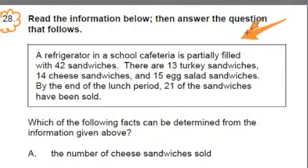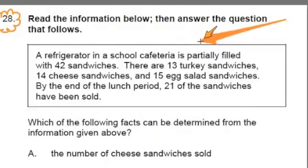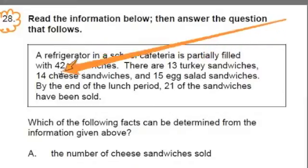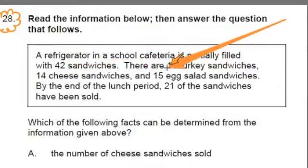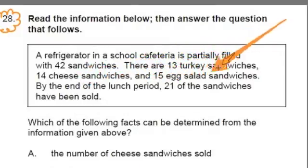Focusing in on the box now. A refrigerator in a school cafeteria is partially filled with 42 sandwiches. There are 13 turkey sandwiches, 14 cheese sandwiches, and 15 egg sandwiches. By the end of the lunch period, 21 of the sandwiches have been sold.